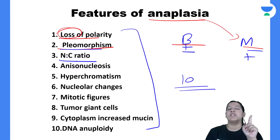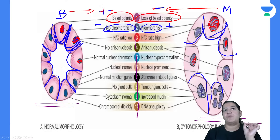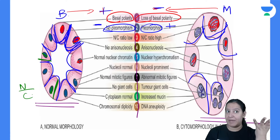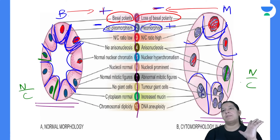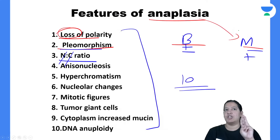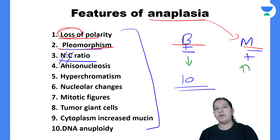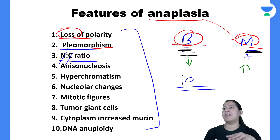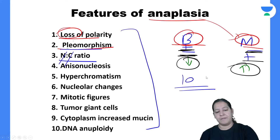The third feature is the NC ratio — nucleus to cytoplasm ratio. In benign tumors, the nucleus is small and cytoplasm is large, so NC ratio is less. In malignant tumors, the nucleus is large and cytoplasm is less, so NC ratio is increased. NC ratio is less in benign and more in malignancy.